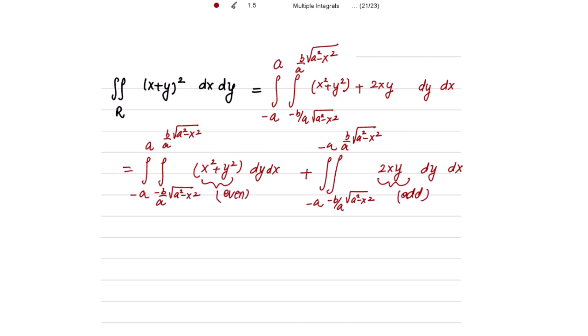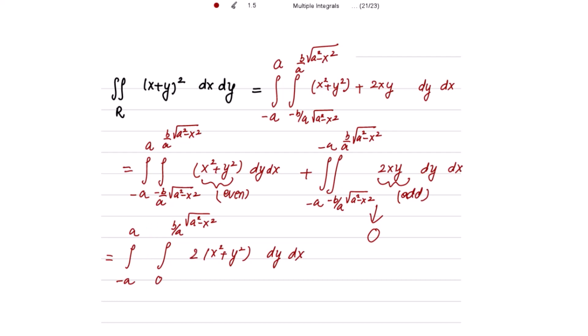There is a rule: whenever the limits are symmetric (same magnitude, opposite sign) with an even function, the integral becomes twice the integral from 0 to the upper limit. And whenever the limits are symmetric with an odd function, the integral becomes 0. So the inner integral becomes twice from 0 to (b/a)√(a² - x²) of (x² + y²) dy dx, and the second integral (with 2xy) is completely 0.